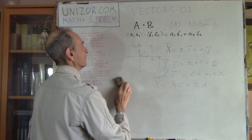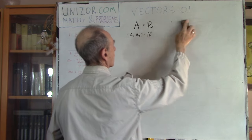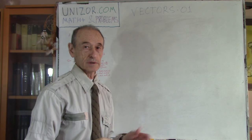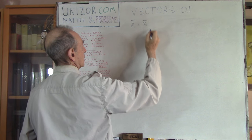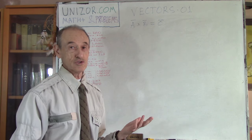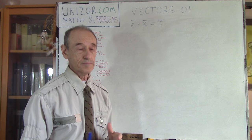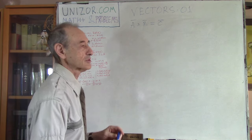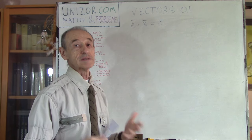Now let's talk about vector product — cross product. If you have two vectors A cross B, the result is a vector, unlike the scalar product which always results in a number. Vector product is defined for the three-dimensional case, primarily for purposes of physics, since our world is traditionally three-dimensional. All these vectors are three-dimensional, and the vector product is defined as a vector.